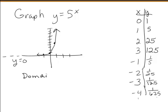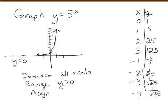And so in the end, our domain is all real numbers. Our range are all the y's bigger than 0. And we've got an asymptote of y equals 0.